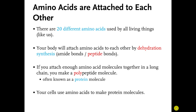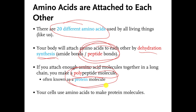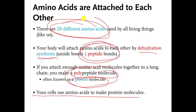Welcome back, everybody. In the previous video, we ended at this slide, but I'm going to start here again because it's a lot of information and it's worth repeating. There are 20 universal amino acids — that means there are 20 amino acid molecules found in all living organisms. Amino acid molecules are connected to each other by a special type of dehydration synthesis reaction. The bond that gets made is called a peptide bond. If you attach enough amino acids to each other, the molecule you make is called a polypeptide, also known as a protein molecule.